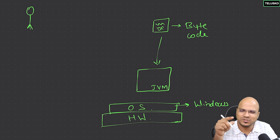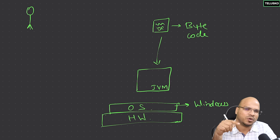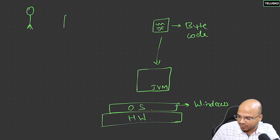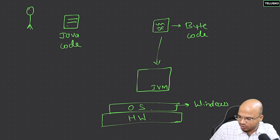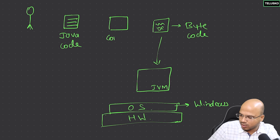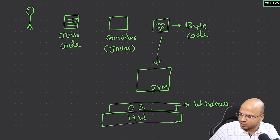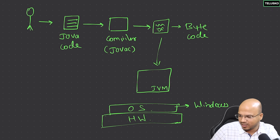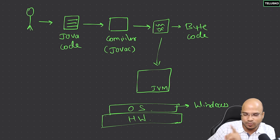Can you write bytecode? Of course not. You only understand English-type languages. So whatever code we write — like system.out.print — it's English-type language. What you create is a Java file or Java code, which is readable, and you have to convert this into bytecode. For that, we have something in between called a compiler. Since this is a Java compiler, we call it javac — Java compiler. You write the code, it gets compiled into bytecode, and that bytecode goes on the JVM and runs.